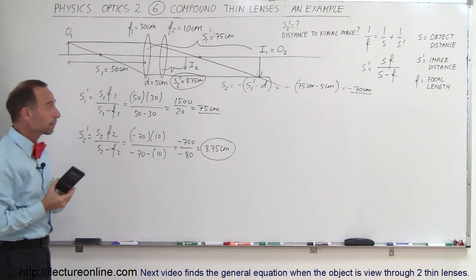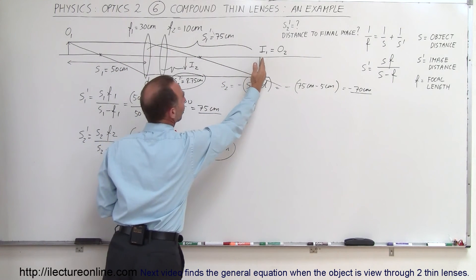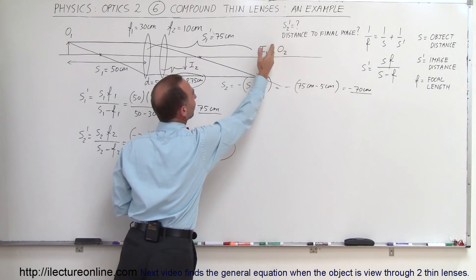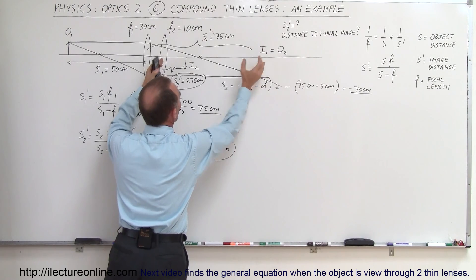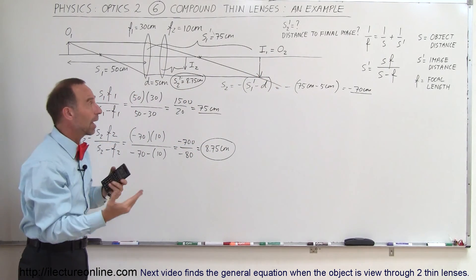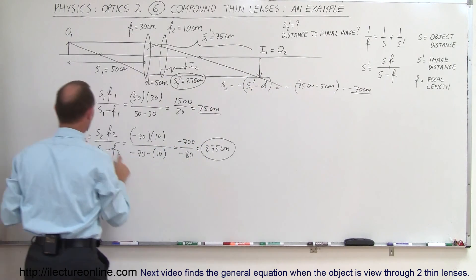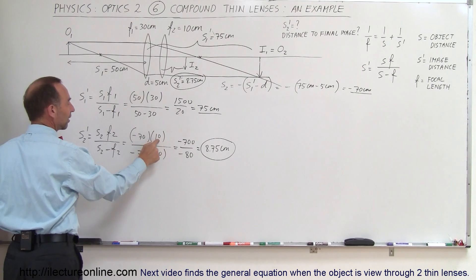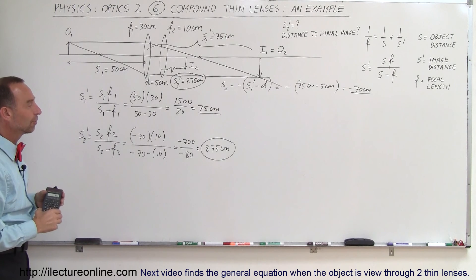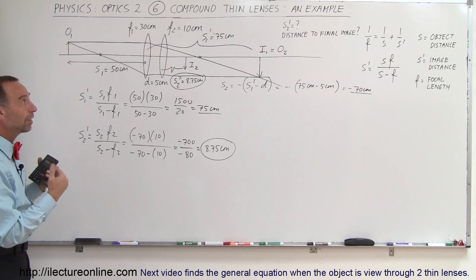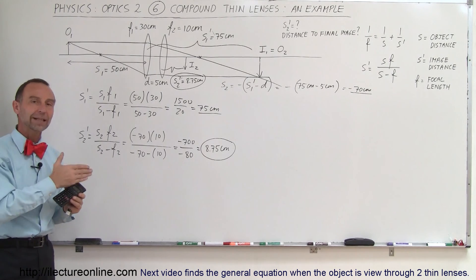To summarize: we take it one lens at a time. We start with the object and the first lens to find the first image. The first image becomes the second object. We find the object distance by subtracting the distance between the two lenses, place a negative in front because it's a virtual object, and use that negative 70 centimeters with the focal length of the second lens to find the final image location. Now we'll use these same steps to derive the general equation for a compound thin lens problem.